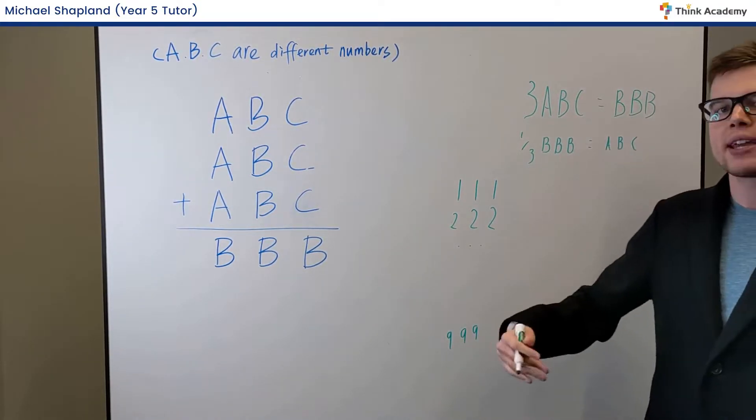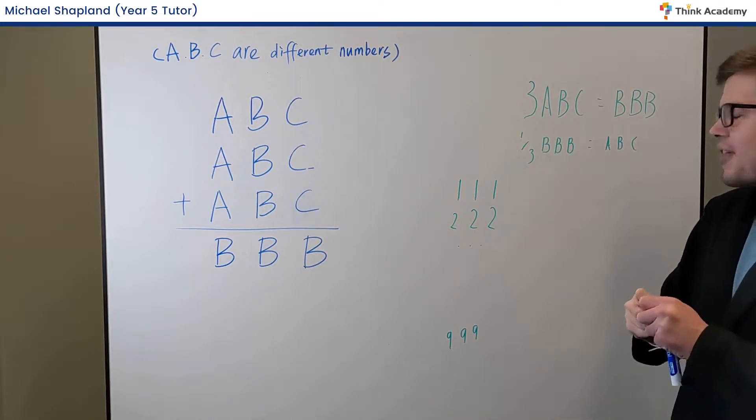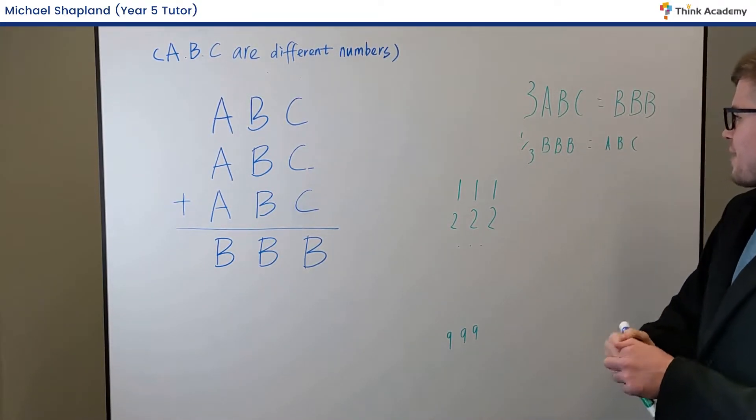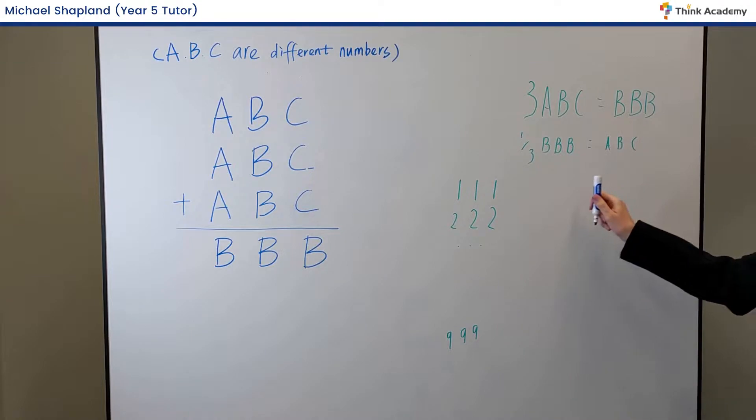But straight away, we can start thinking about the properties of these numbers and start eliminating them that way. What do I mean by that? Well, first of all, we know that a third of BBB must be ABC. But wait a second.